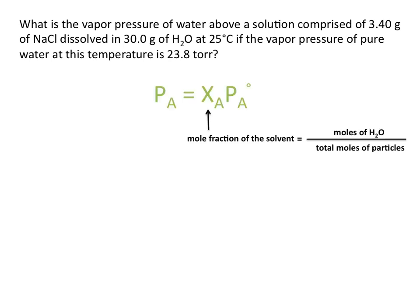Remember that in this equation, X sub A is the mole fraction of the solvent — that would be the moles of H₂O divided by the total moles of all the particles. I say total moles of particles instead of total moles of NaCl because NaCl is an ionic compound, and in water it ionizes to form sodium ions and chloride ions. So for every one molecule of NaCl, we actually have two different particles. So we need to know how many moles of H₂O we have divided by how many moles of everything total.